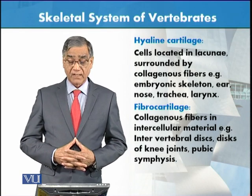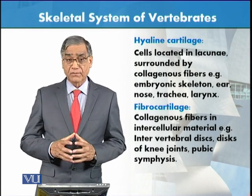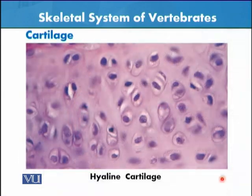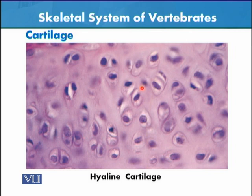These cartilages are very important for support, attachment, and movement. This is a slide of cartilage in which we can see spaces called lacunae, and inside these are darkly stained cells called chondrocytes.